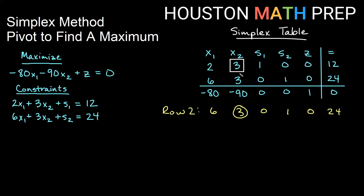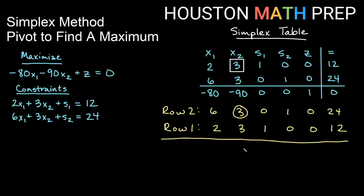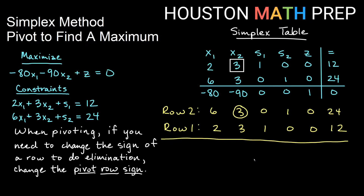I'll write down my row one. You'll notice I would need to change the sign of my pivot row, because if I just write down row one, that's 2, 3, 1, 0, 0, 12 — and if I simply add these together, I'll get three plus three equals six, which is not what I want. An important rule in the simplex method when pivoting: whenever we need to change a sign to do elimination, it needs to be the pivot row's sign that we change, not the other row. So since I'm changing row two and want that entry to be zero, I need to change the sign of the pivot row. I'll multiply my pivot row, row one, by negative one — that will change all the signs of the pivot row, and now when I add together I will get zero as intended in that second column spot.